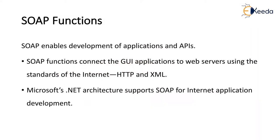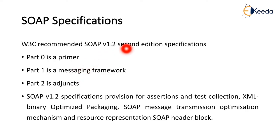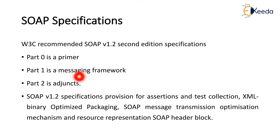SOAP enables the development of applications and APIs — Application Programming Interfaces. SOAP functions connect the graphical user interface to web servers using internet standards, that is HTTP and XML. Microsoft's .NET architecture supports SOAP for internet application development. The W3C recommends SOAP version 1.2 second edition specification: Part 0 is a primer, Part 1 is messaging network, and Part 2 is agents.